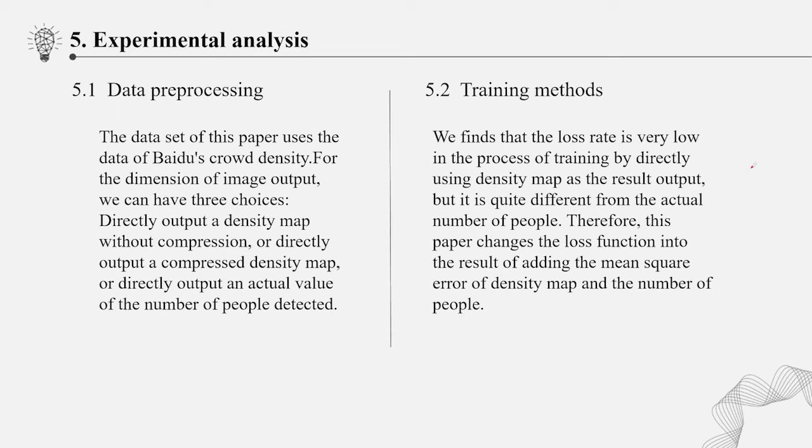Training method. In this paper, we find that the loss rate is very low in the process of training by directly using density map as the result output. But it is quite different from the actual number of people. Therefore, this paper changes the loss function into the result of adding the mean square error of density map and the number of people.